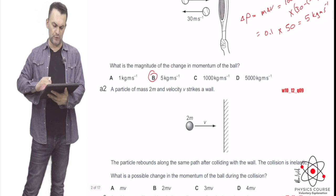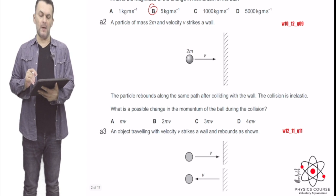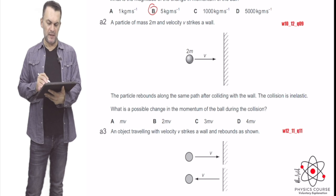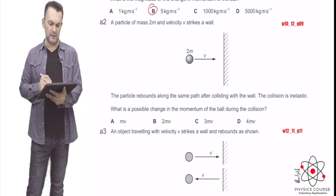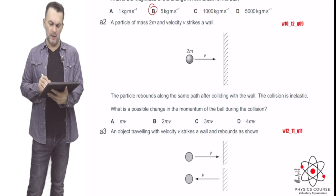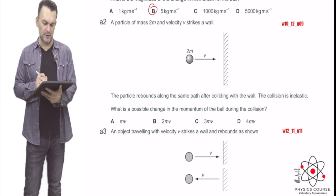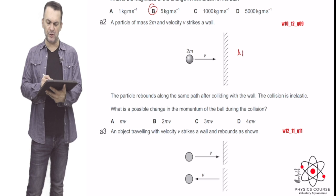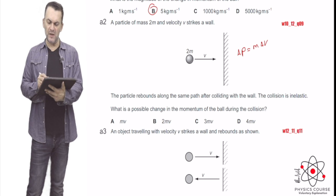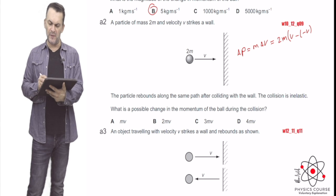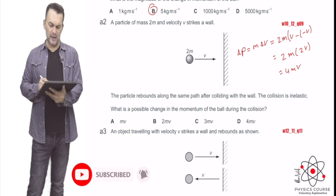Here is one more example on change in momentum. A particle of mass 2M and velocity V strikes a wall and rebounds along the same path. The collision is perfectly elastic, so it rebounds with the same speed. The change in momentum equals mass times change in velocity: 2M × (V − (−V)) = 2M × 2V = 4MV. The answer is option D.